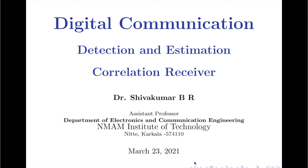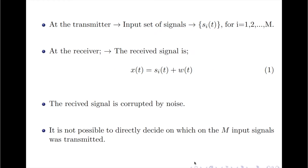In my previous videos on detection and estimation, I have been talking about how a digital transmitter can transmit at each time one of the input signals, represented by S_i of t, where i takes on the value 1 to M. This transmission conveys which of the M messages we want to send. At the receiver, we receive the signal S_i of t corrupted by noise, so the received signal X of t equals the input signal S_i of t plus the noise component W of t. Since the received signal is corrupted by noise, it is not possible to directly decide which of the M input signals was transmitted.